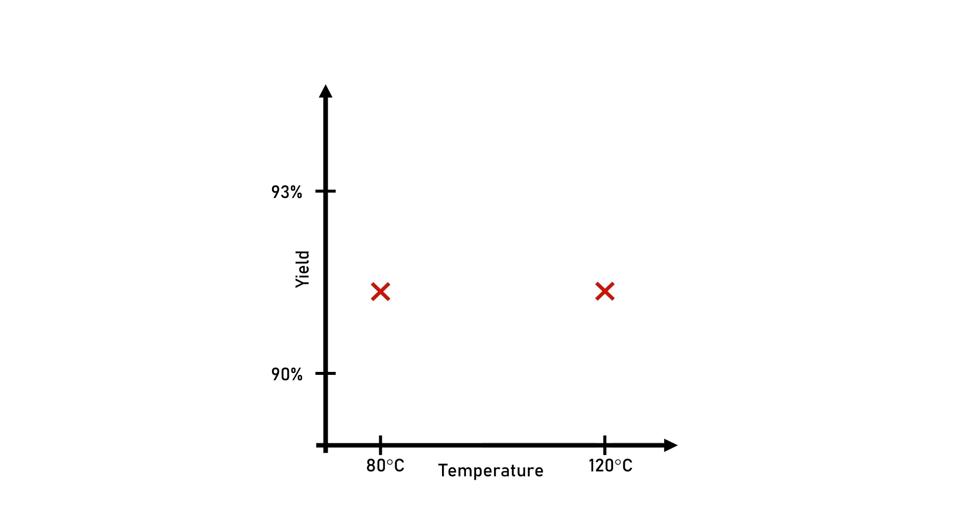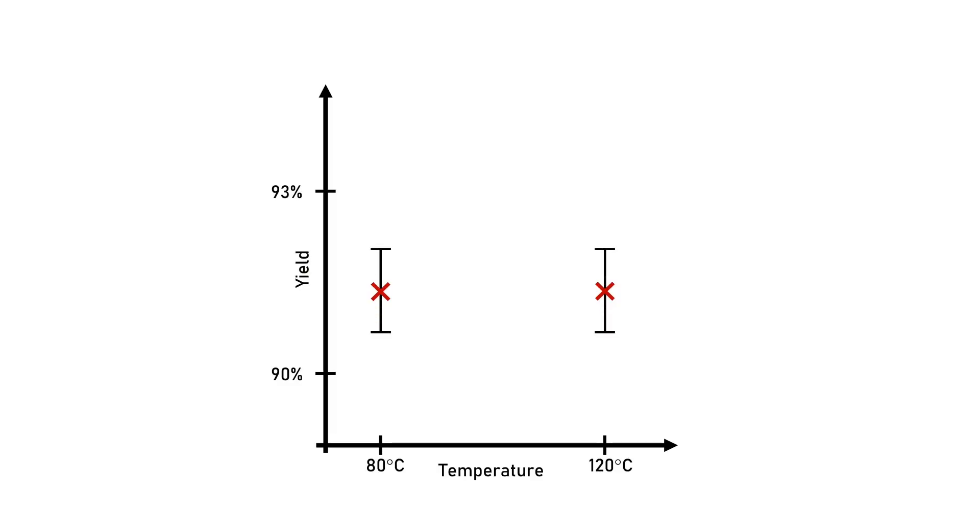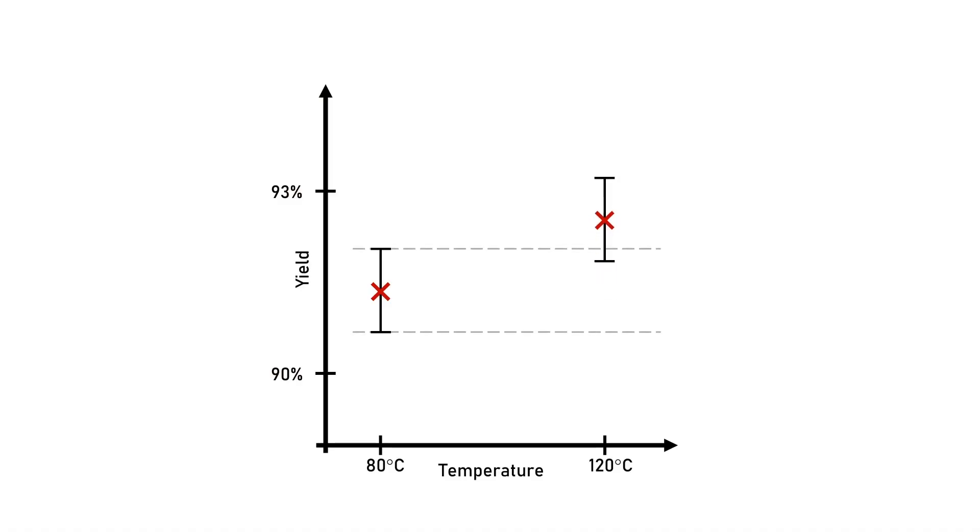What you had there is a type 1 error — you thought there was an effect of the temperature on the yield, but in reality there was not. Often you see results displayed in combination with error bars. The mean of the recorded values is displayed as the result, and often the standard deviation is used as error bars. Both values can be easily calculated in Excel or any other software. Overlapping error bars means there is no significant effect even though it might look that way, and if you use the standard deviation as your error bars you can be 70% sure that you are not making a mistake.